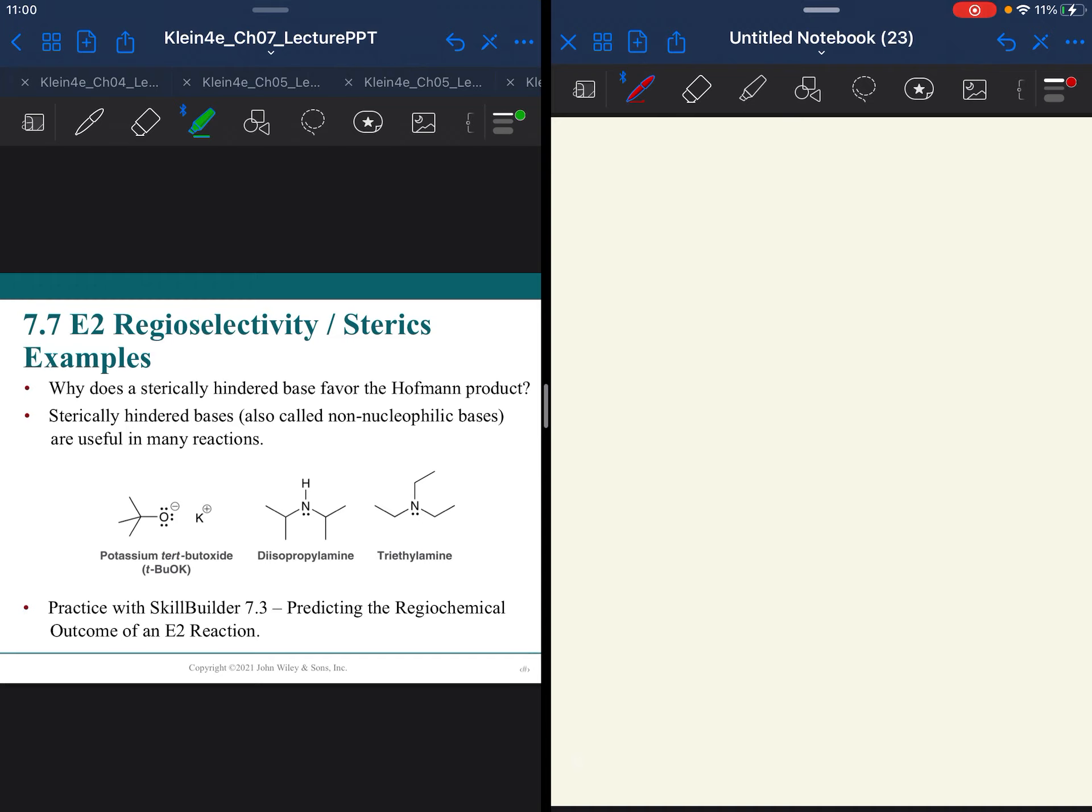Well, think about what's happening here. When you have these options, these protons are going to be slightly more sterically hindered because you have this CH3 out here. The protons on the methyl groups are going to be less sterically hindered. So our big bulky base, which may have trouble getting in to make the more stable Zaitsev product, it will be much easier for them to pluck off one of these less sterically hindered protons that will lead to the Hofmann product.